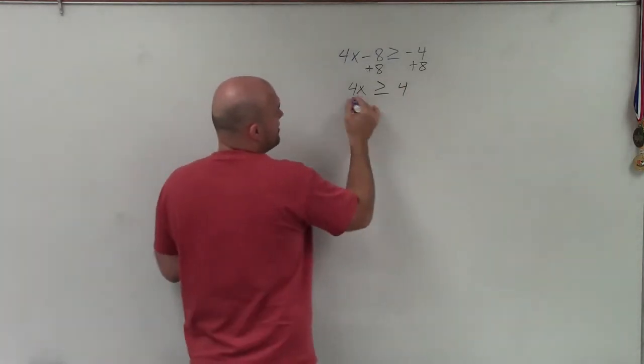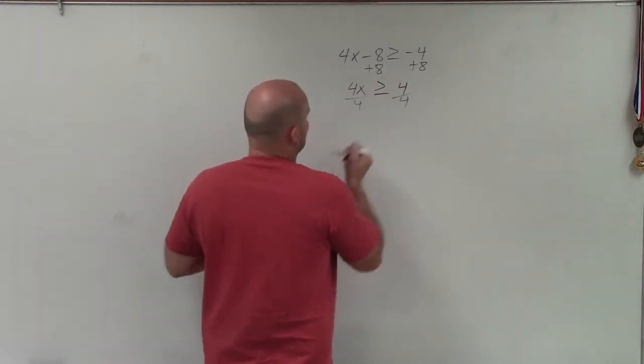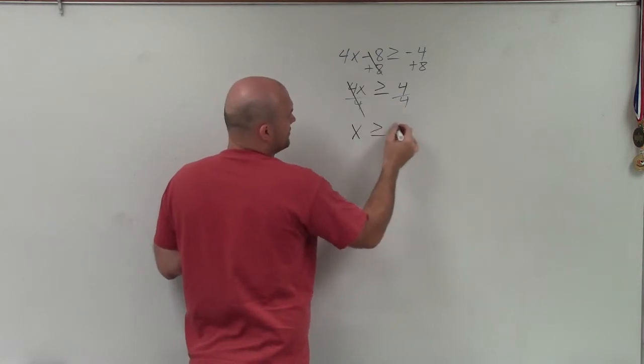Now, to undo multiplication by 4 on my x, I divide by 4 on both sides. And therefore, I have a final equation of x is greater than or equal to 1.